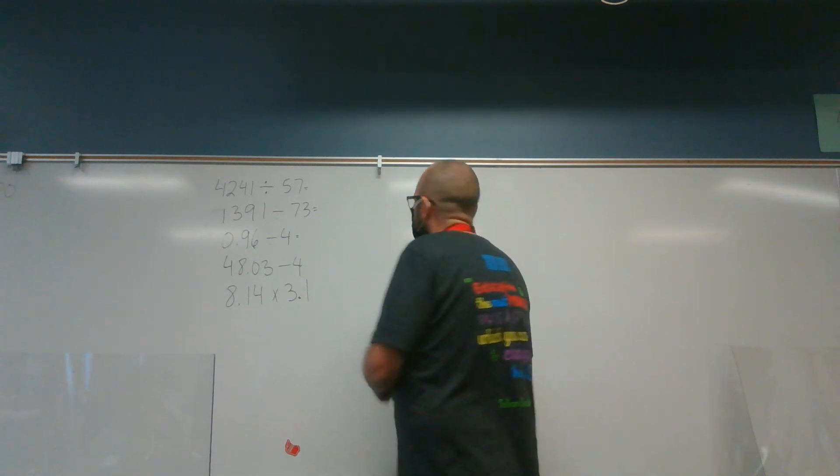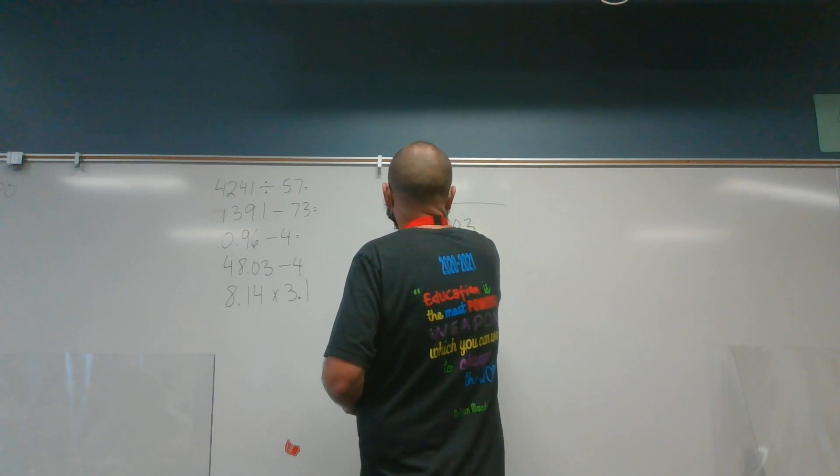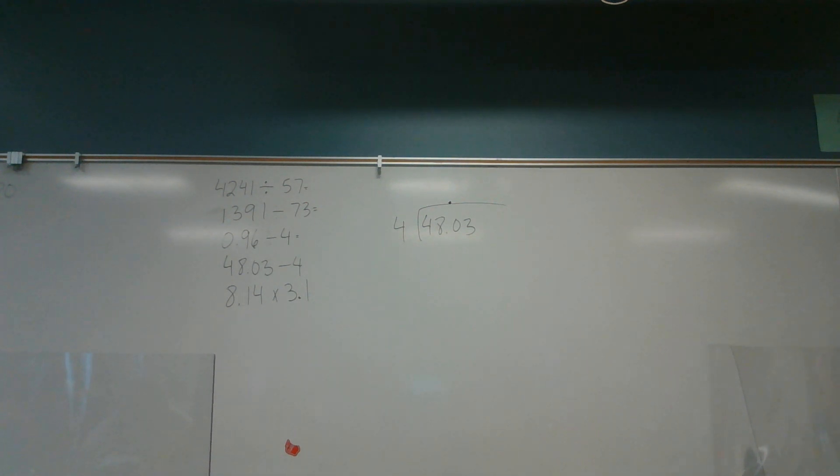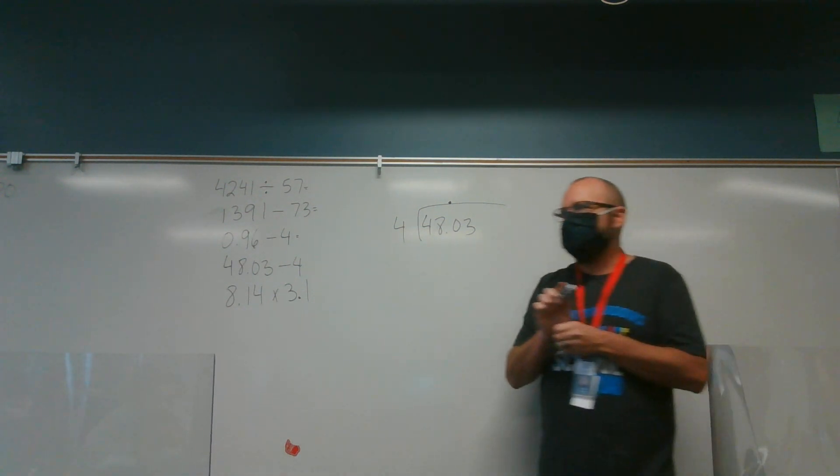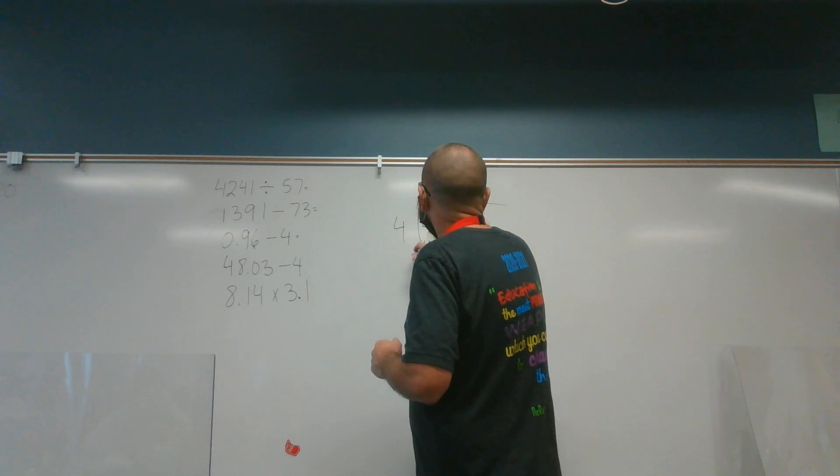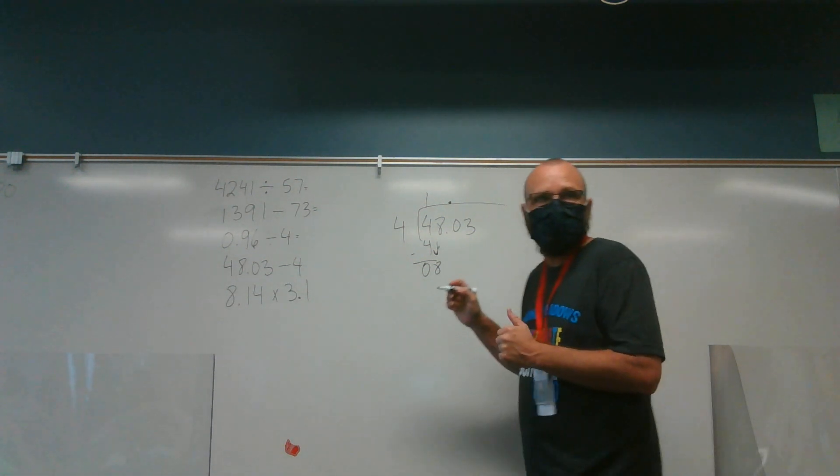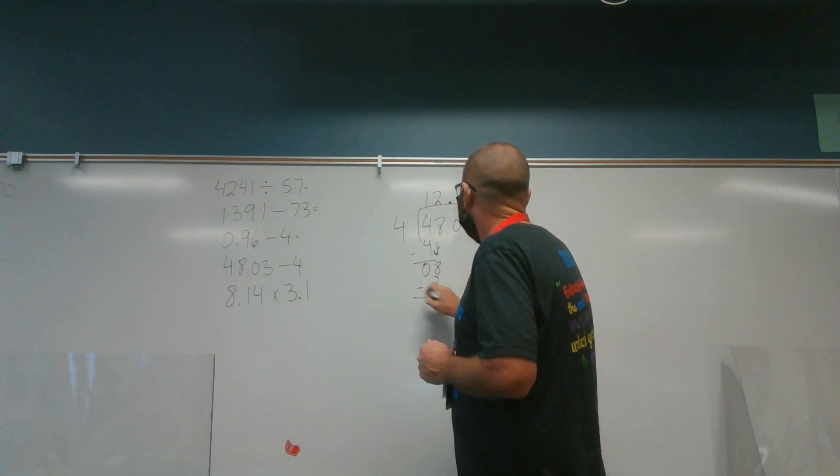Let's take 48 and 3 hundredths divided by 4. I start by asking myself, self, does 4 go into 4? Yes. My self says yes. And I subtract. I get 0. I bring down my 8. I ask myself, self, does 4 go into 8? Yes. How many times? 2. And 2 times 4 is 8. Subtract and I get 0.